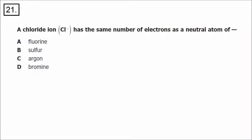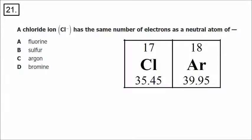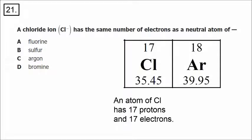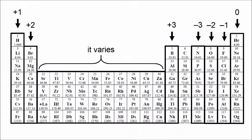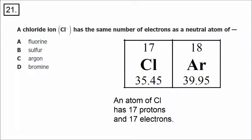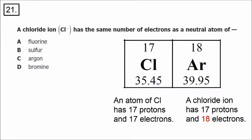Number 21 is about chloride — the negative one charge on a chlorine atom, making it a chloride ion. Chlorine, the atom, has 17 protons and 17 electrons. Chloride, the ion, has a negative one charge, meaning it has gained electrons. A chloride ion still has 17 protons, but now it has 18 electrons. The question asks which neutral atom has the same number of electrons. The answer is argon, which has 18 protons and 18 electrons.